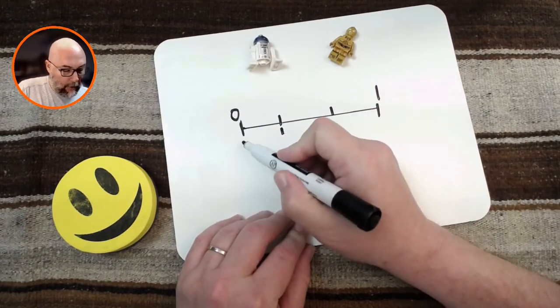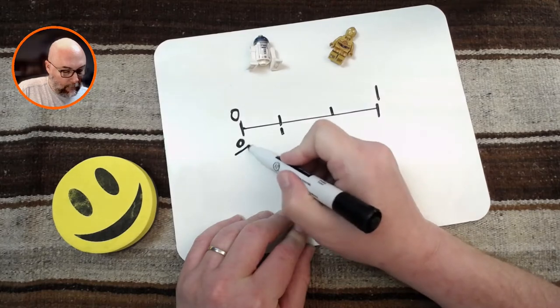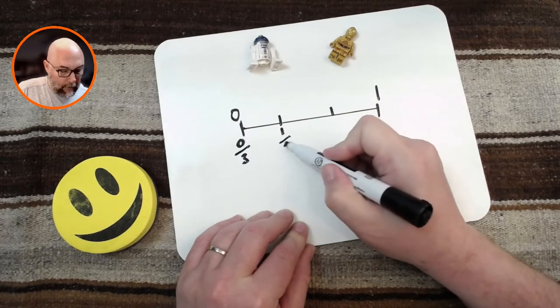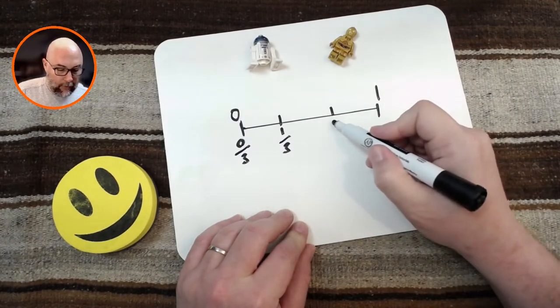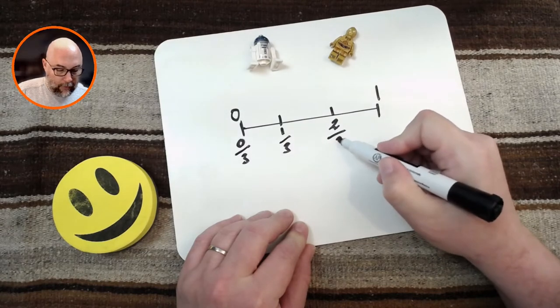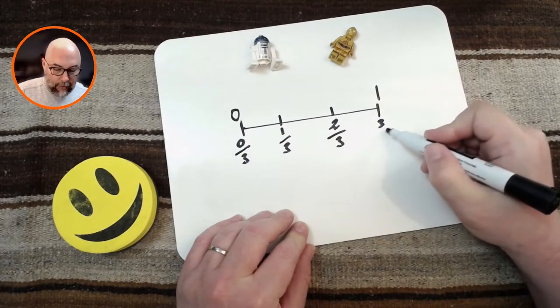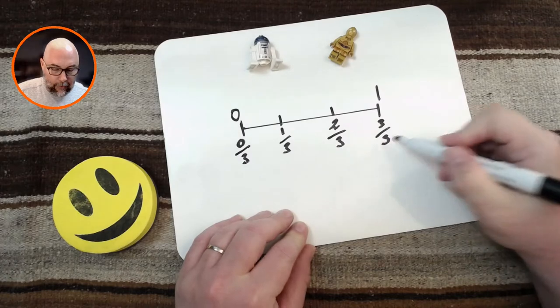Now, I can divide this number line into 3 pieces, 3 equal pieces. That's more or less equal, but we'll go with that. And we have to label it: 0 thirds, 1 third, 2 thirds, and 3 thirds.